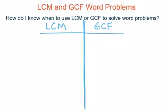There are a few keywords or key phrases you want to look for in each type of word problem. Starting with least common multiple, we want to look for repetition. If something is repeating itself, or two or three things are repeating, that most of the time means we're going to be using multiples to solve that problem.